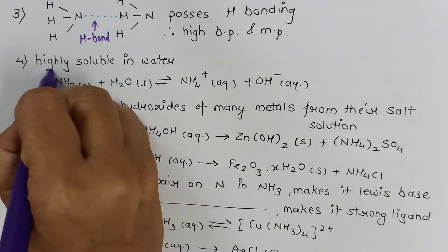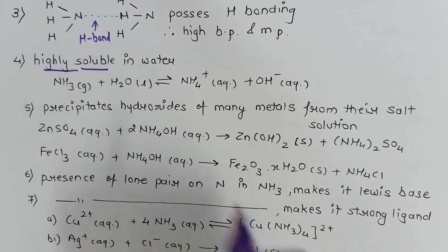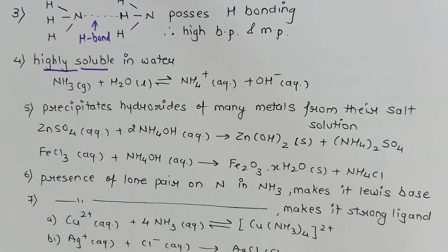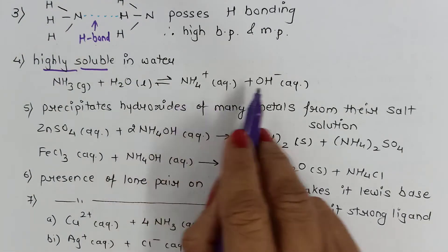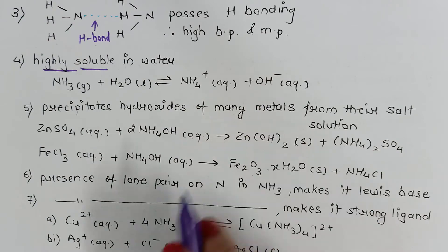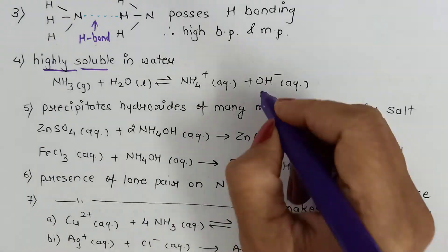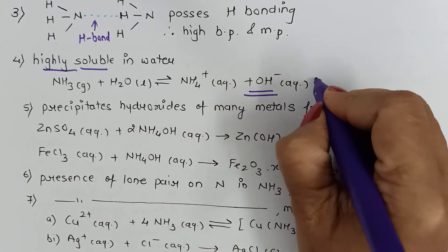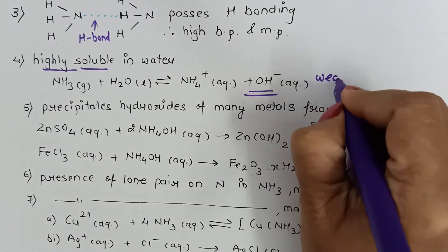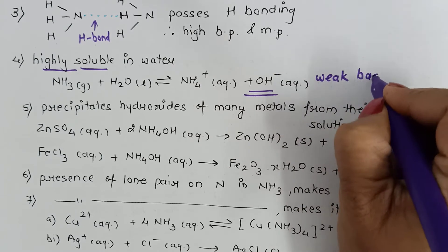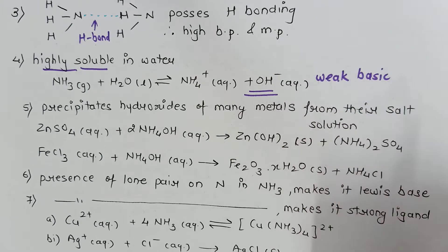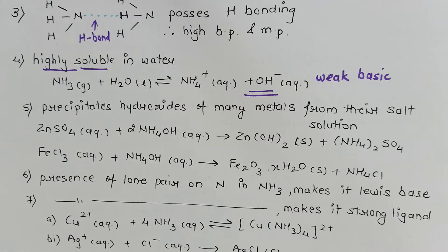Ammonia is highly soluble in water. When it dissolves in water, it dissociates to form NH4⁺ and OH⁻ ions, and due to the presence of OH⁻ ions it is weakly basic. The lone pair on nitrogen can also be donated, which further explains why ammonia is weakly basic in nature.